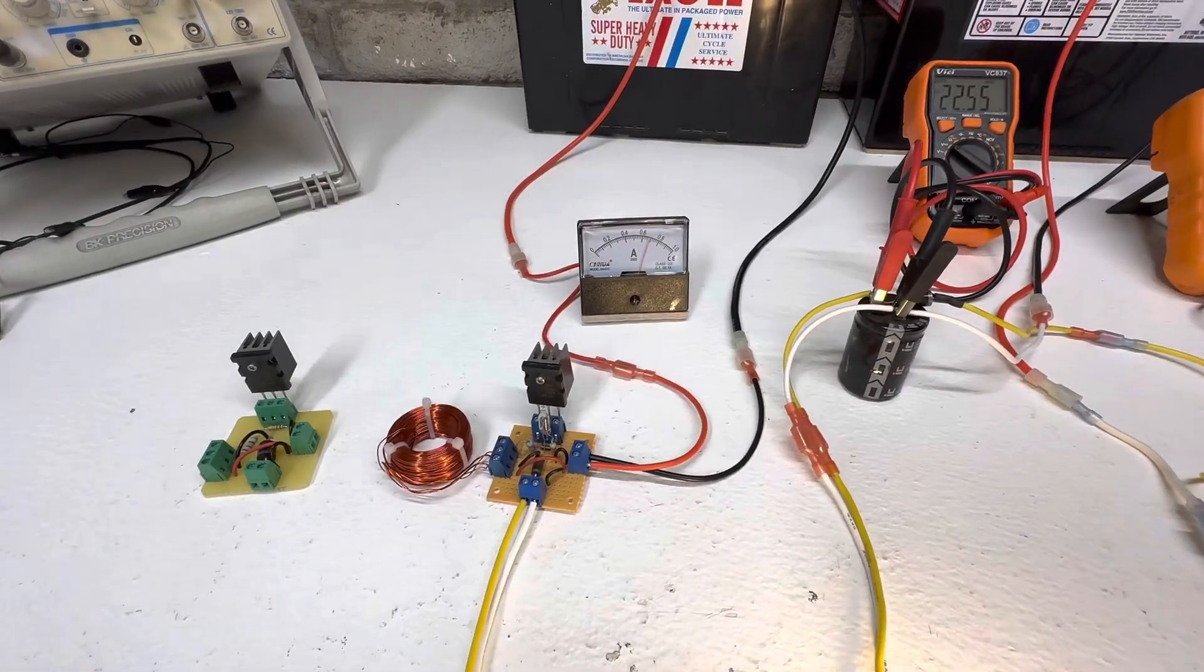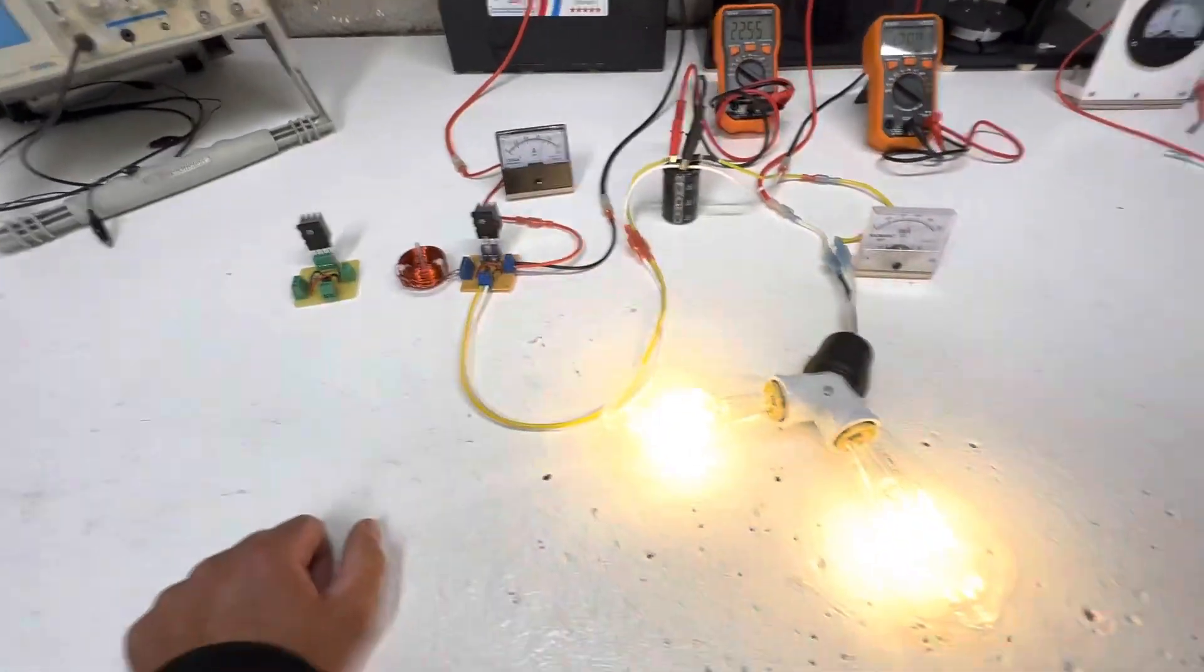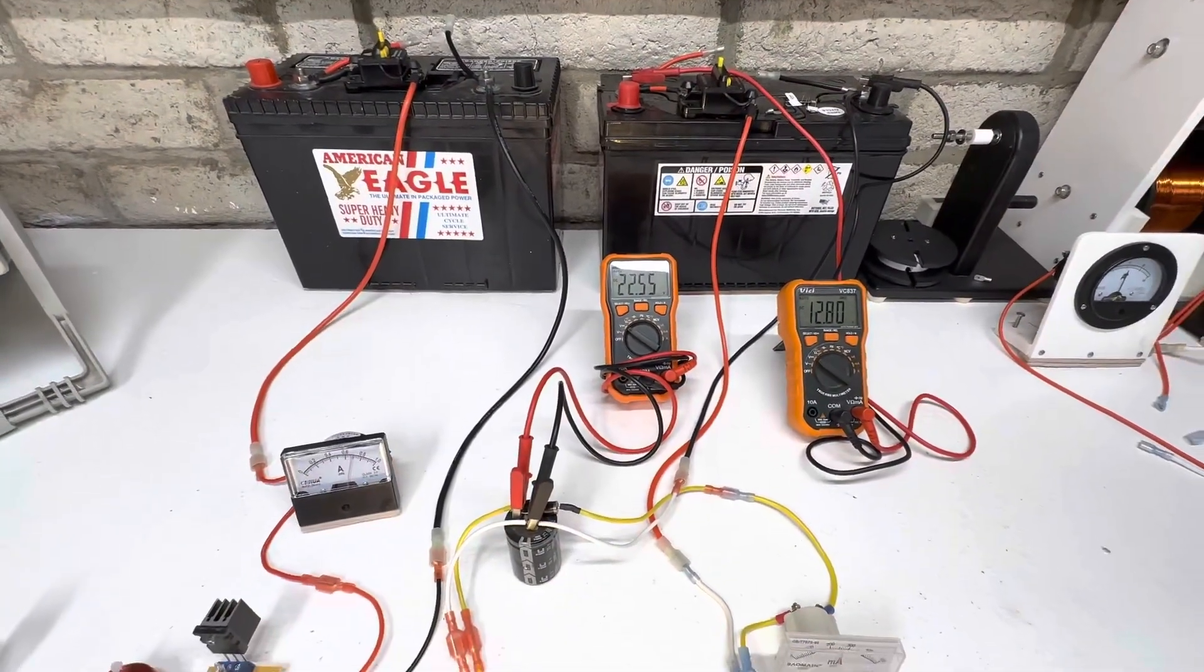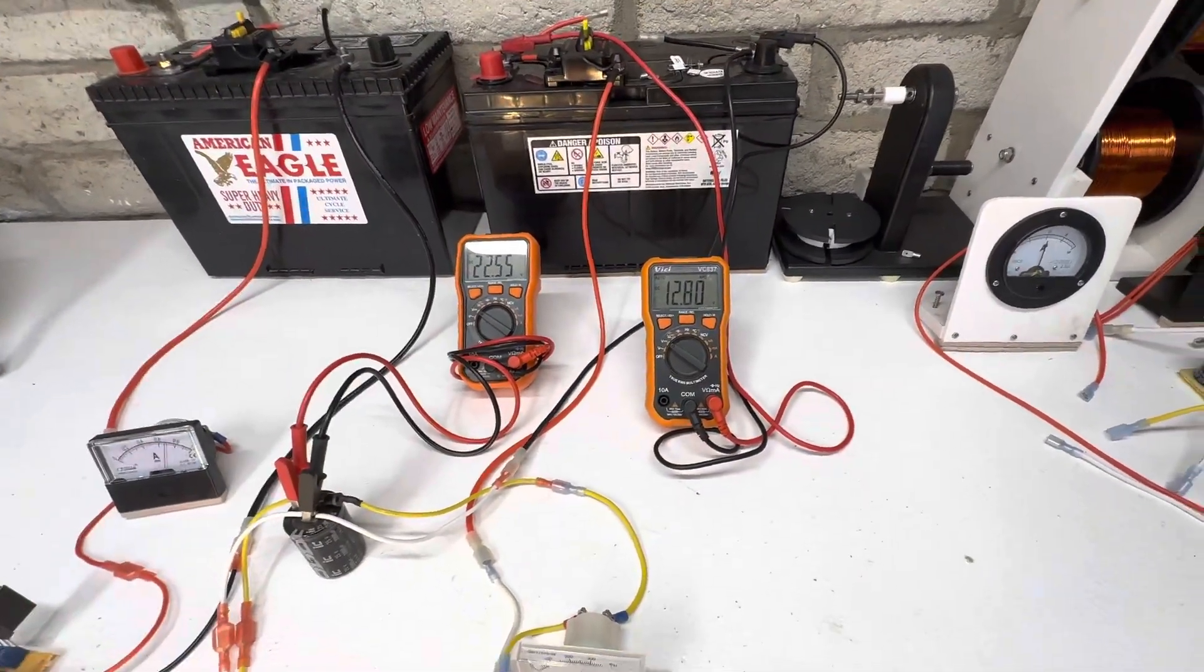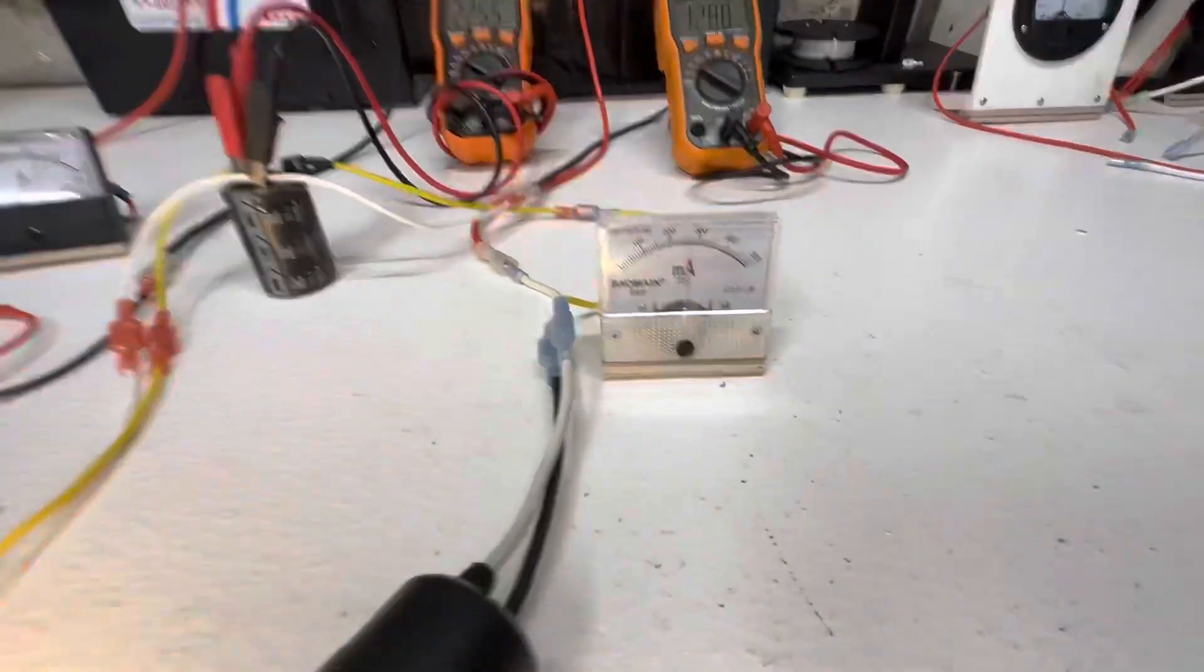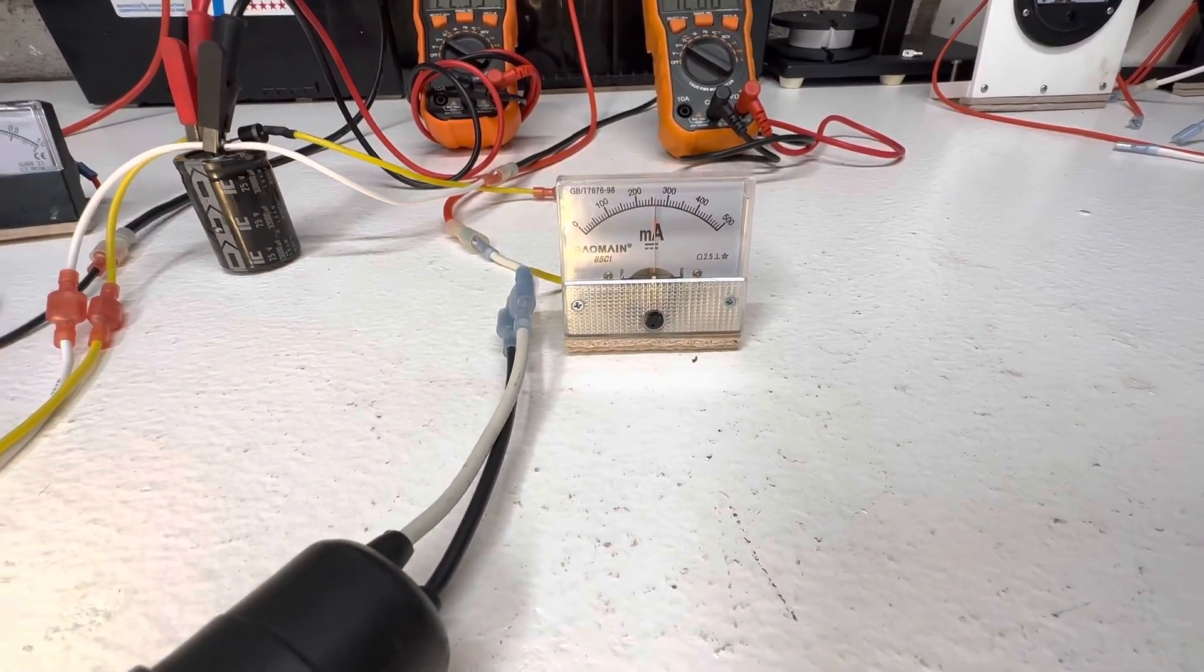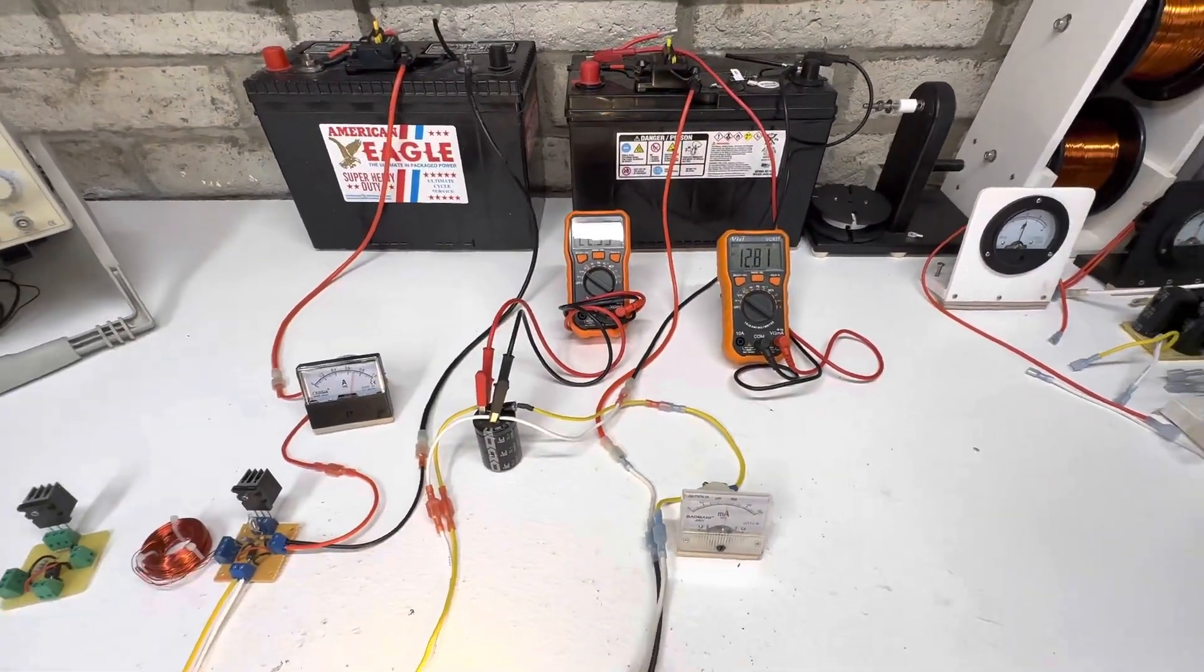Right now we're using about 700 milliamps out of the 12 volt battery. And then coming through here and then the capacitor is standing at 22.55. And then our secondary battery is being charged by about 260 milliamps at 22 volts basically.